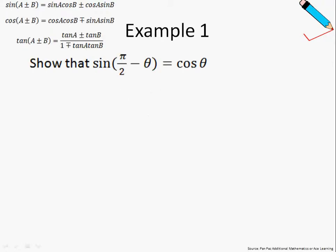So in example number 1, we're asked to show that the sine of π/2 minus θ is equal to cosine of θ. In order to show this, I will first work with the left hand side of the equation and I will be applying the first formula you see over here.